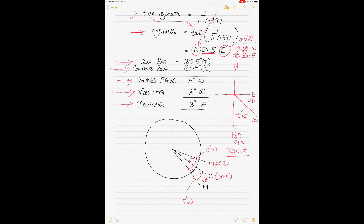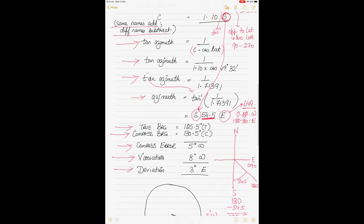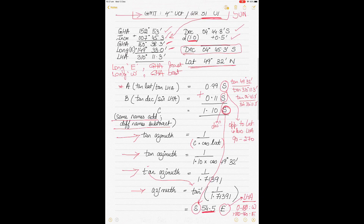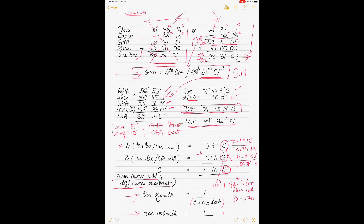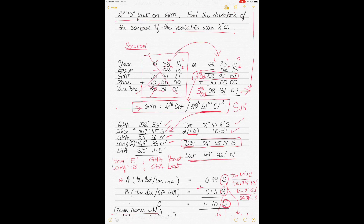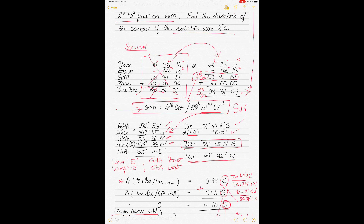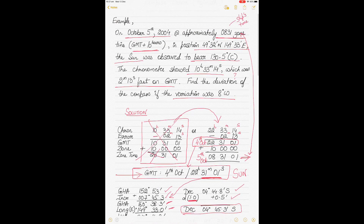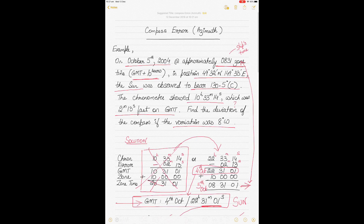If you think the explanation went a bit fast, pause the video where you didn't understand, watch it a couple of times. It's a short question — pause it and watch multiple times and hopefully you'll get a good understanding of how to calculate the compass error using the azimuth method, especially when given a chronometer time from which you have to derive the GMT time.